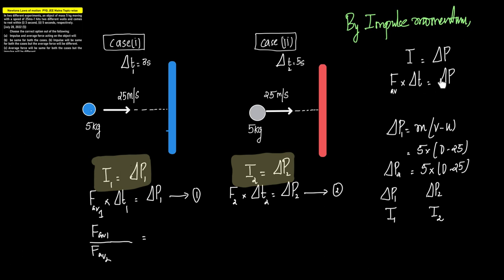Change in momentum is mass times change in velocity, which is final velocity minus initial velocity. According to the question, the object comes to rest, therefore the final velocity is equal to 0. So the final velocity is 0 in both cases, and the initial velocity is 25 m/s in both cases.